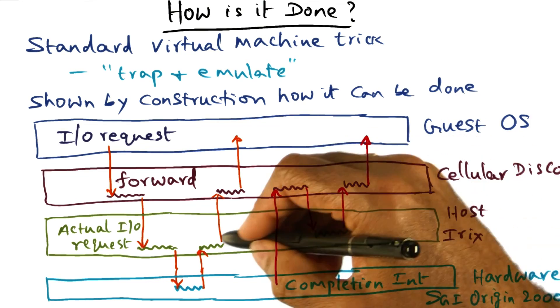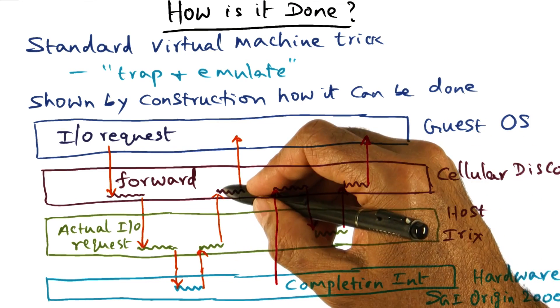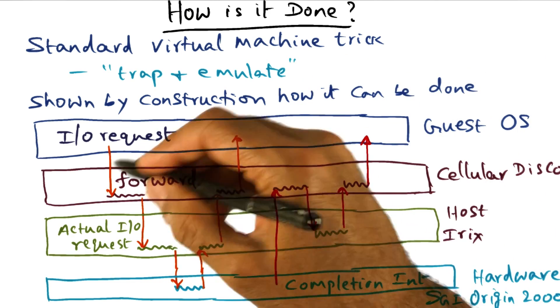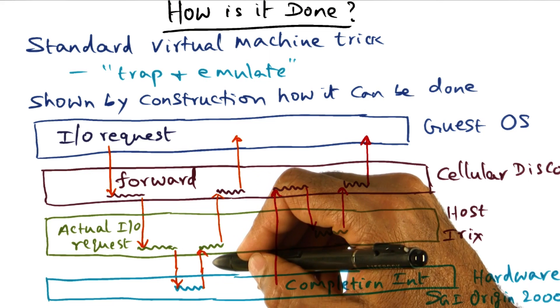It sends it up to the host Irix operating system, and the host Irix operating system passes it to the guest operating system. This is the path of dispatching an I/O request.